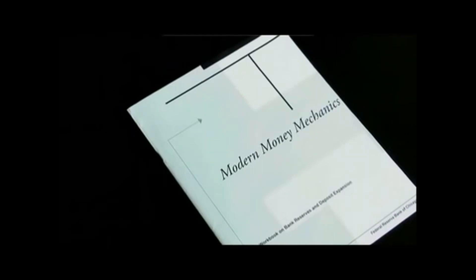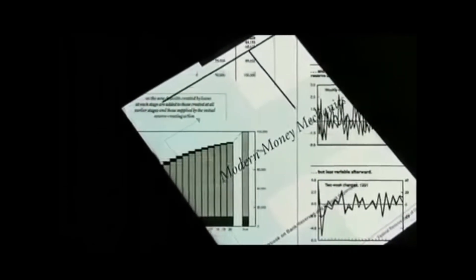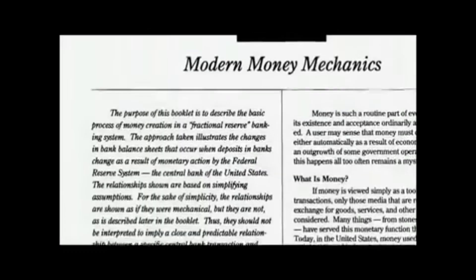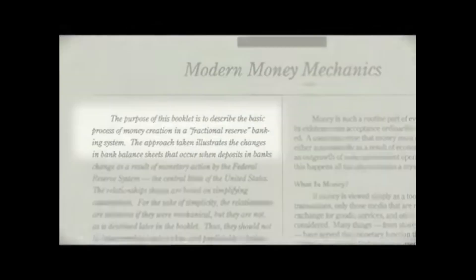A number of years ago, the Central Bank of the United States, the Federal Reserve, produced a document entitled Modern Money Mechanics. This publication detailed the institutionalized practice of money creation as utilized by the Federal Reserve and the web of global commercial banks it supports. On the opening page, the document states its objective: the purpose of this booklet is to describe the basic process of money creation in a fractional reserve banking system.